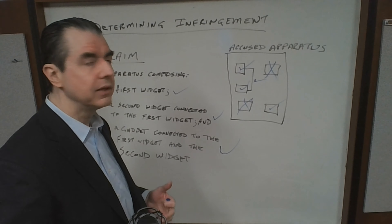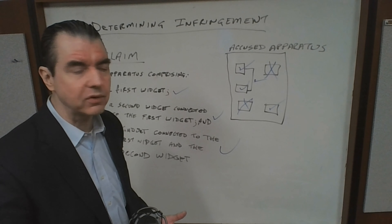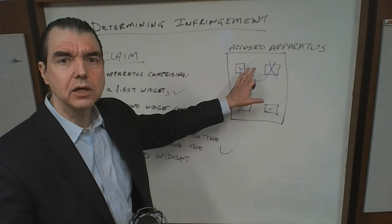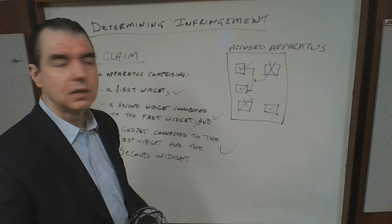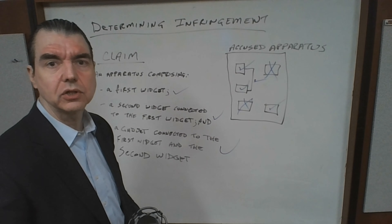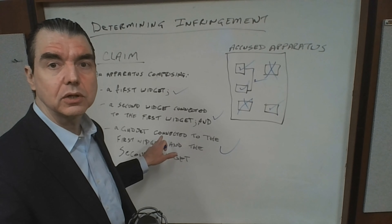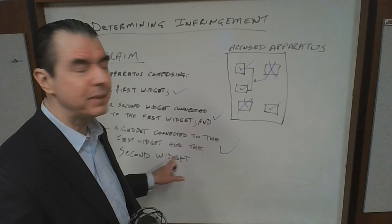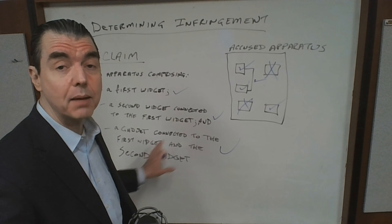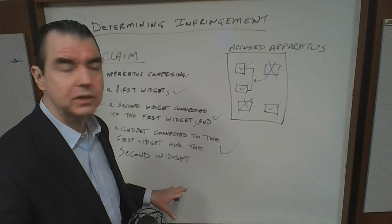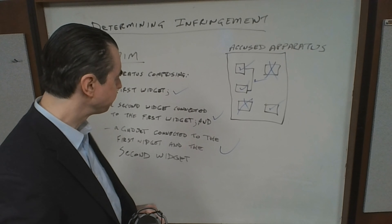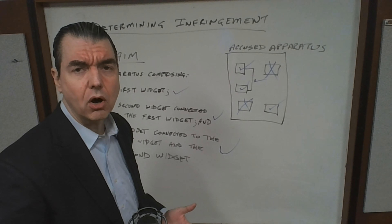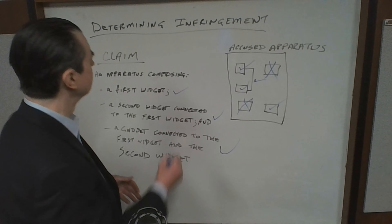There are two types of infringement you have to be aware of. The first is called literal infringement. The analysis we just went through is for literal infringement, which means just what it sounds like: every limitation of the claim has to be literally present in the accused apparatus. In this case, the first two limitations were literally present, but the third limitation — though present — was not connected to the first and second widget as required. So this claim is not literally infringed.